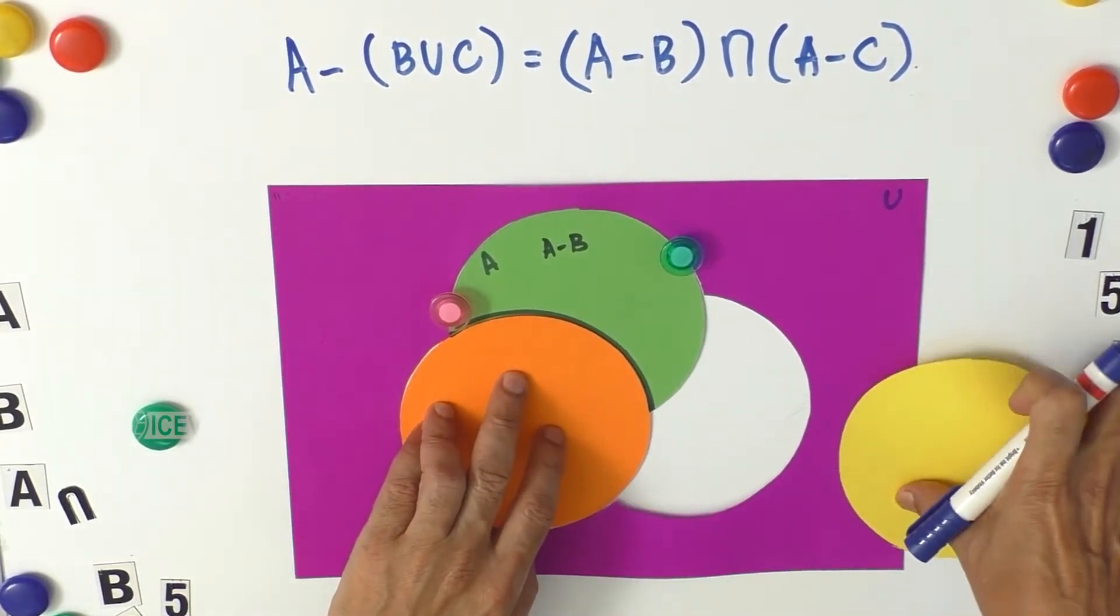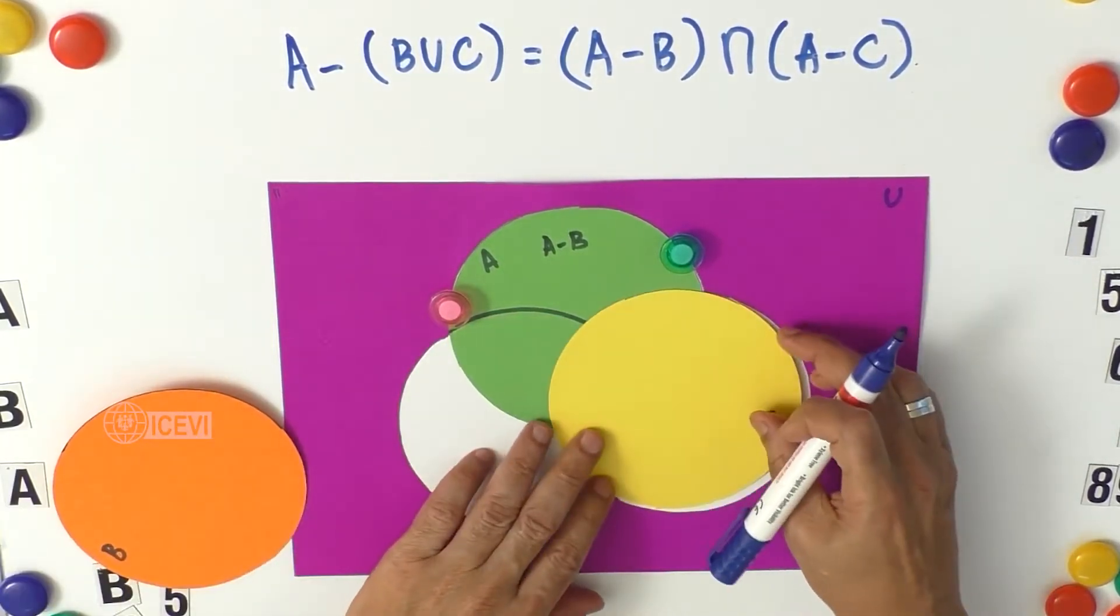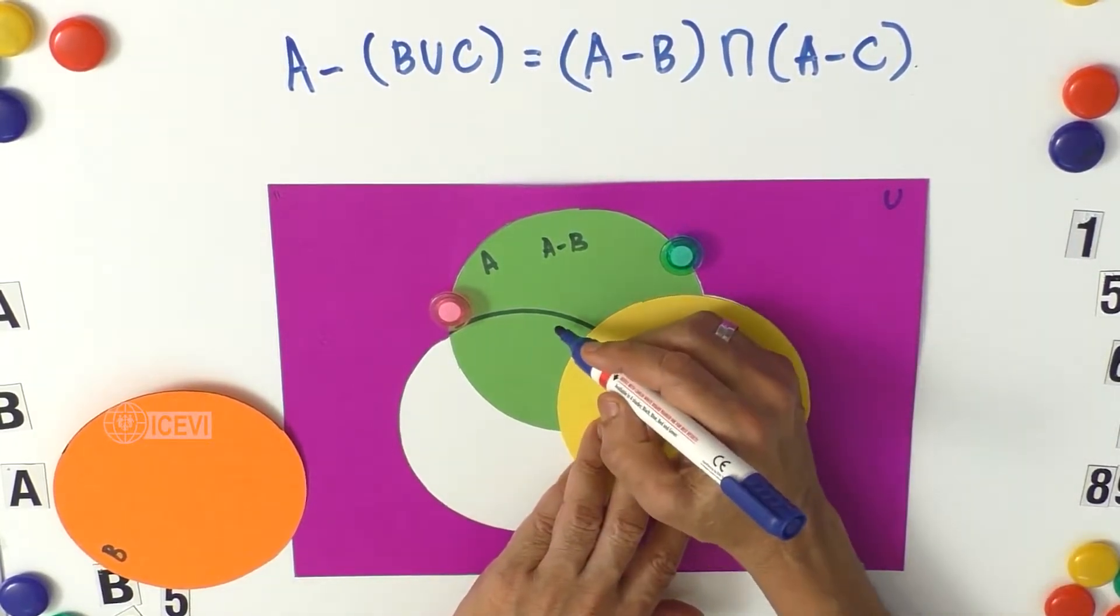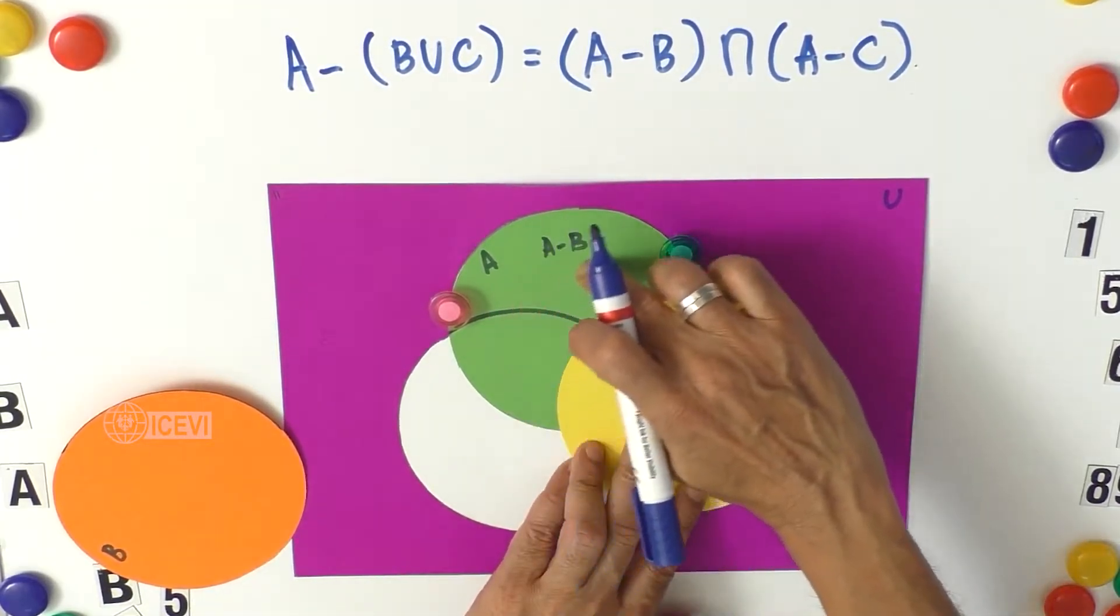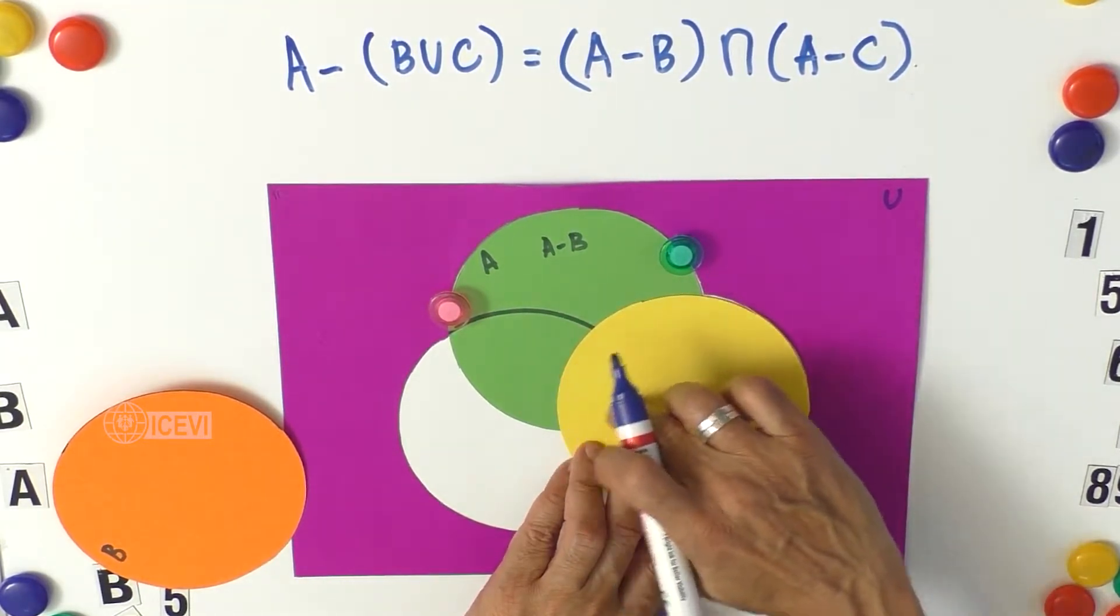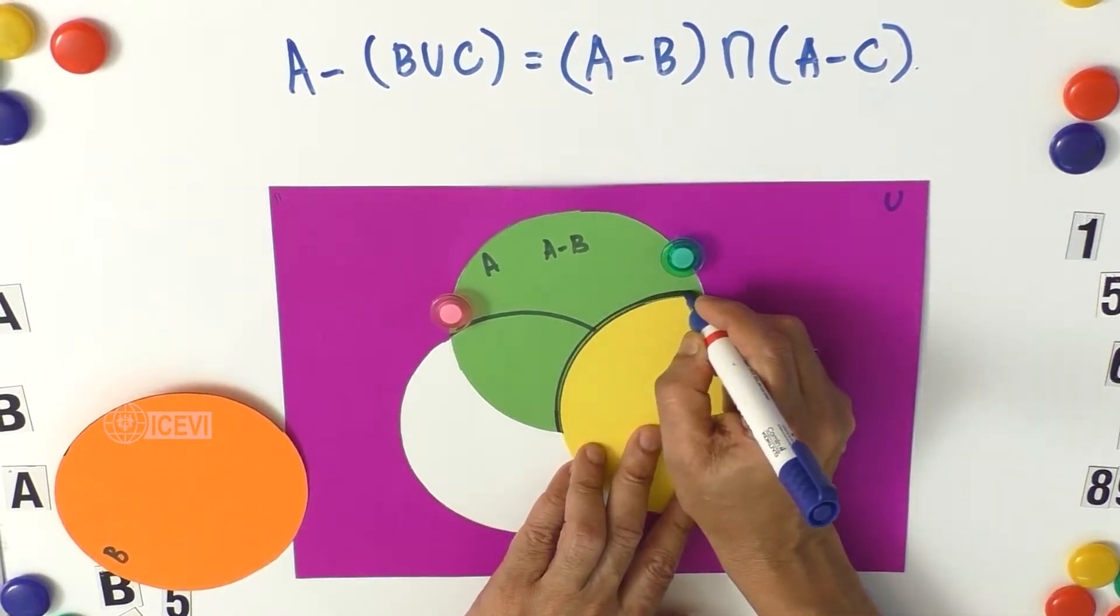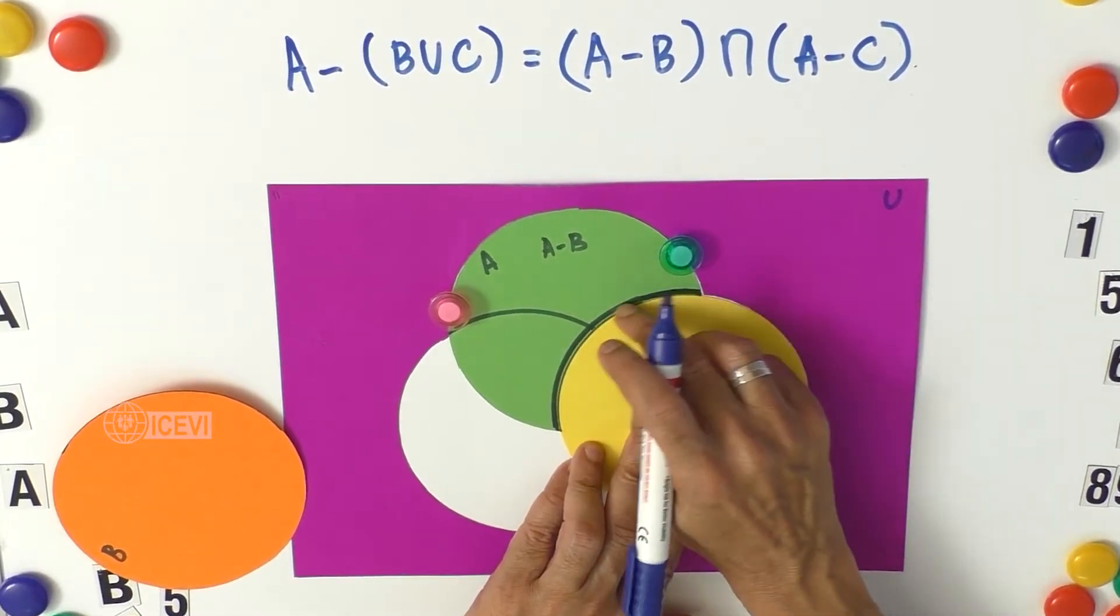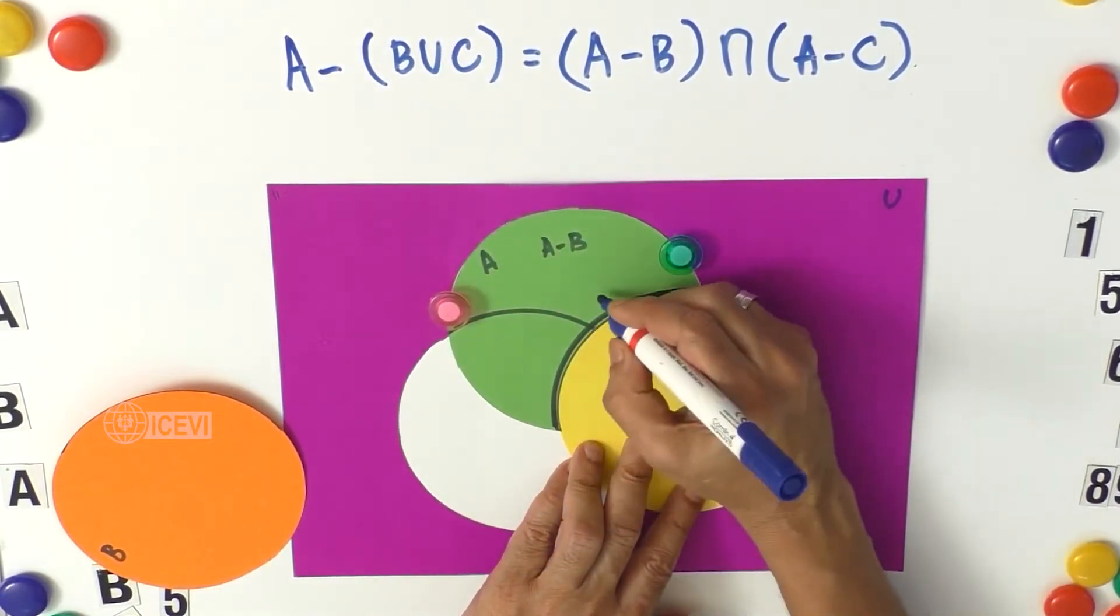Now let us take the other set C now, and let us take C. What is A minus C? That means the elements of A are not appearing in C. So we have to draw a line. Now let the visually impaired child explore. This is A minus C.